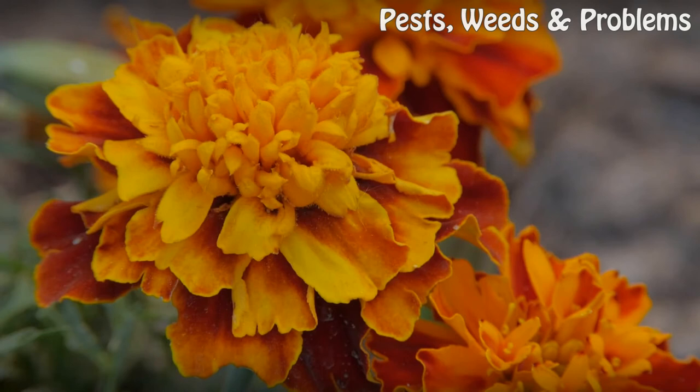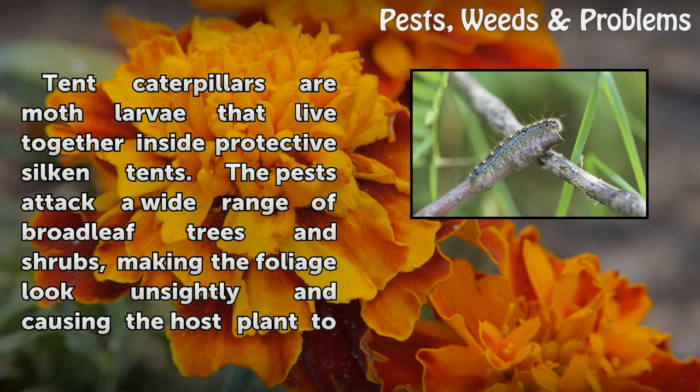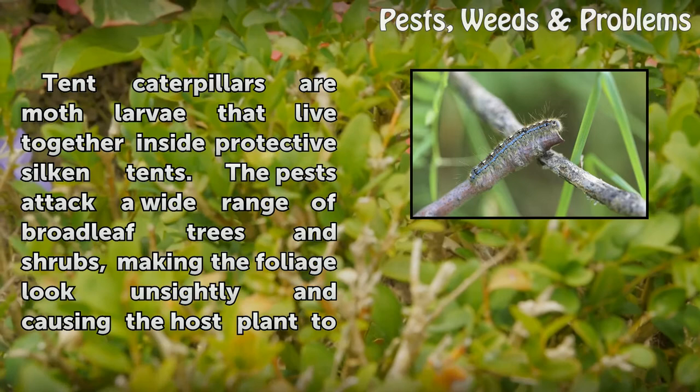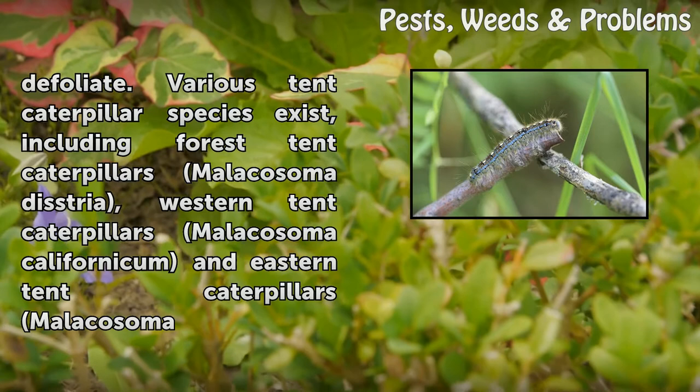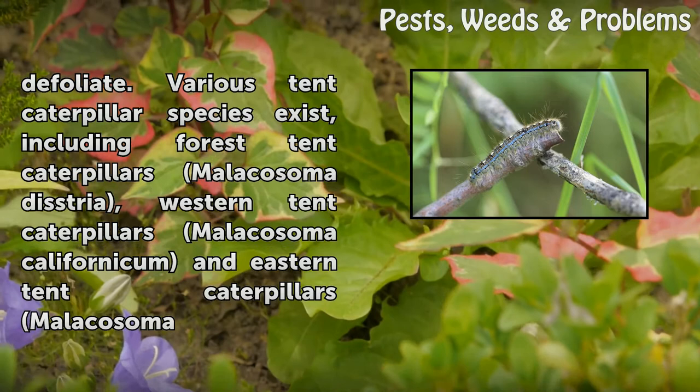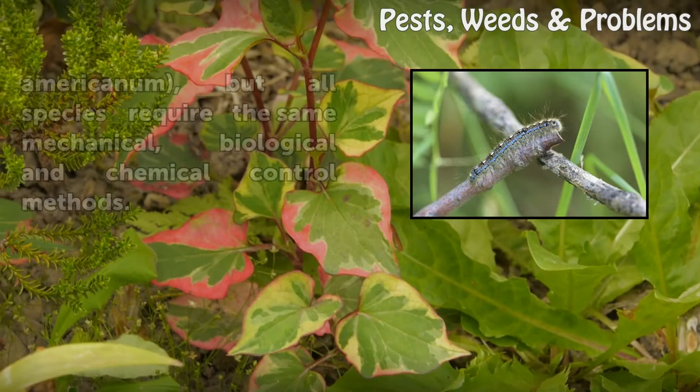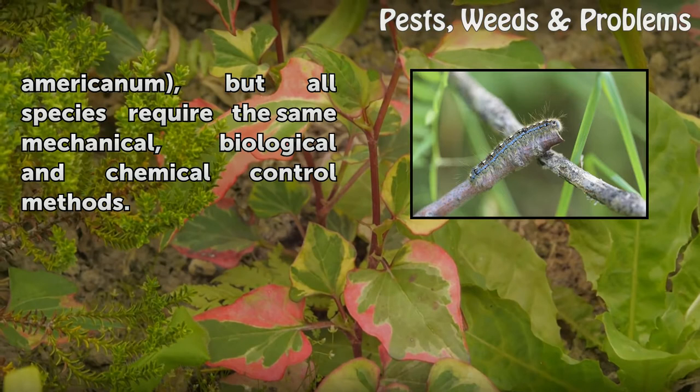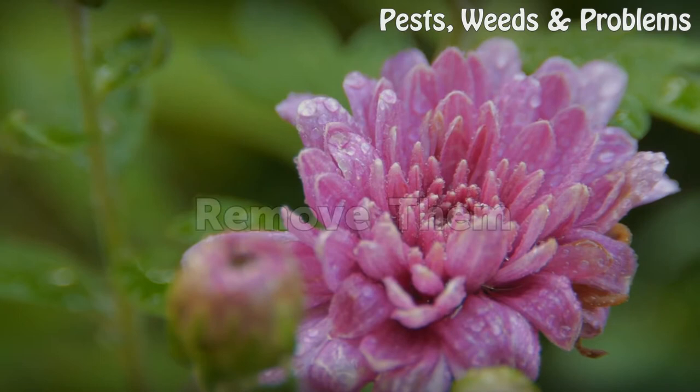Tent caterpillars are moth larvae that live together inside protective silken tents. The pests attack a wide range of broadleaf trees and shrubs, making foliage look unsightly and causing the host plant to defoliate. Various species exist, including forest tent caterpillars (Malacosoma disstria), western tent caterpillars (Malacosoma californicum), and eastern tent caterpillars (Malacosoma americanum), but all species require the same mechanical, biological, and chemical control methods.